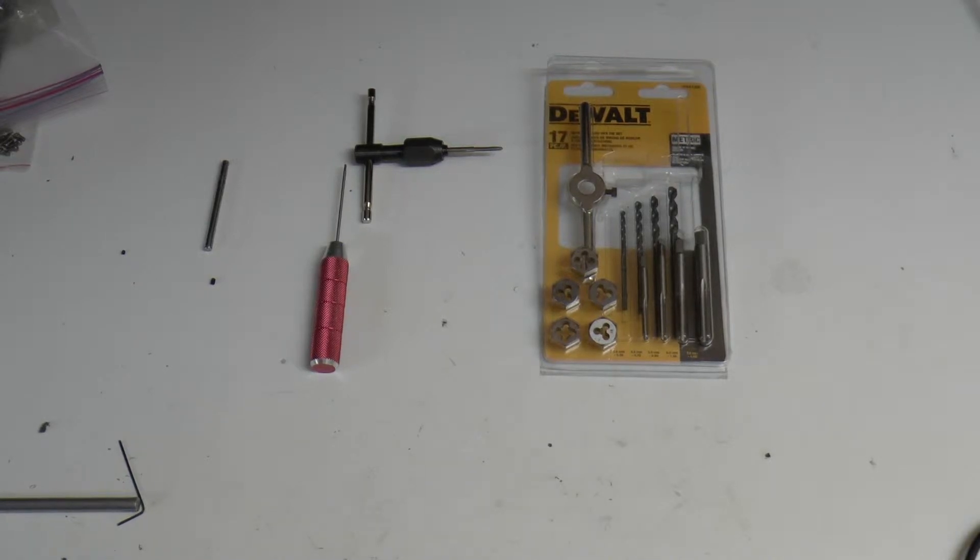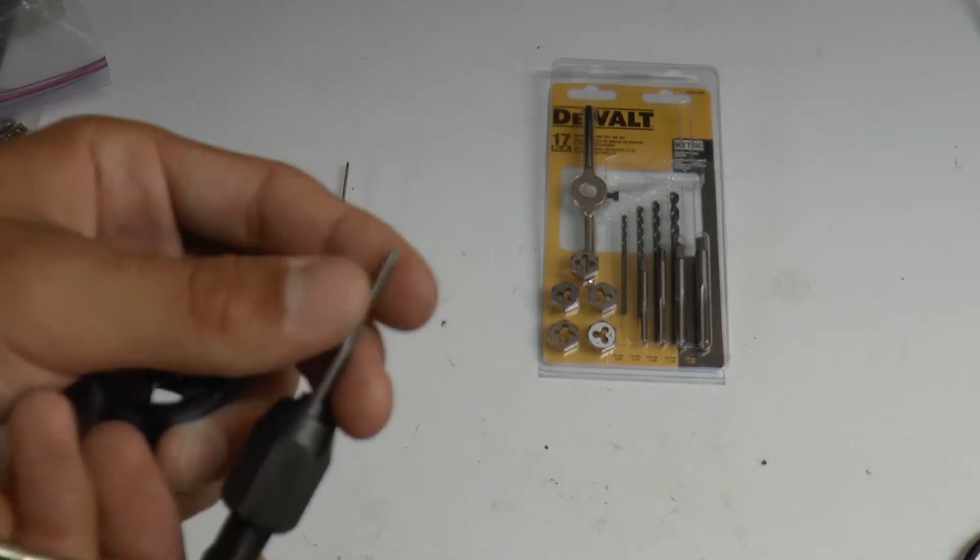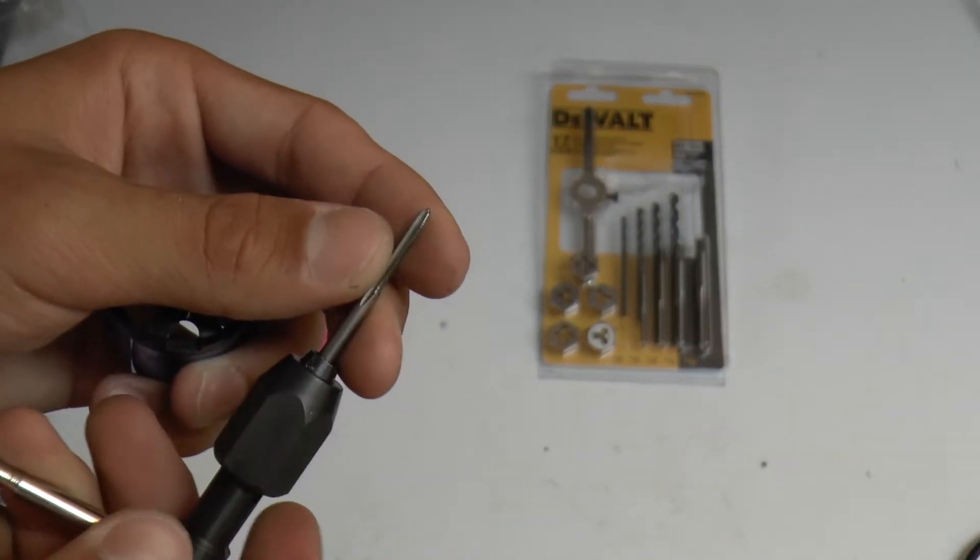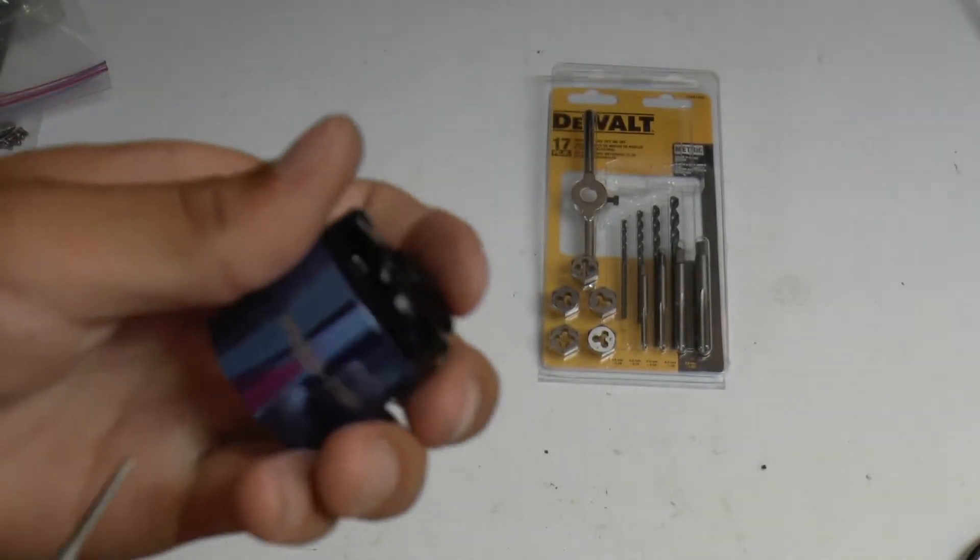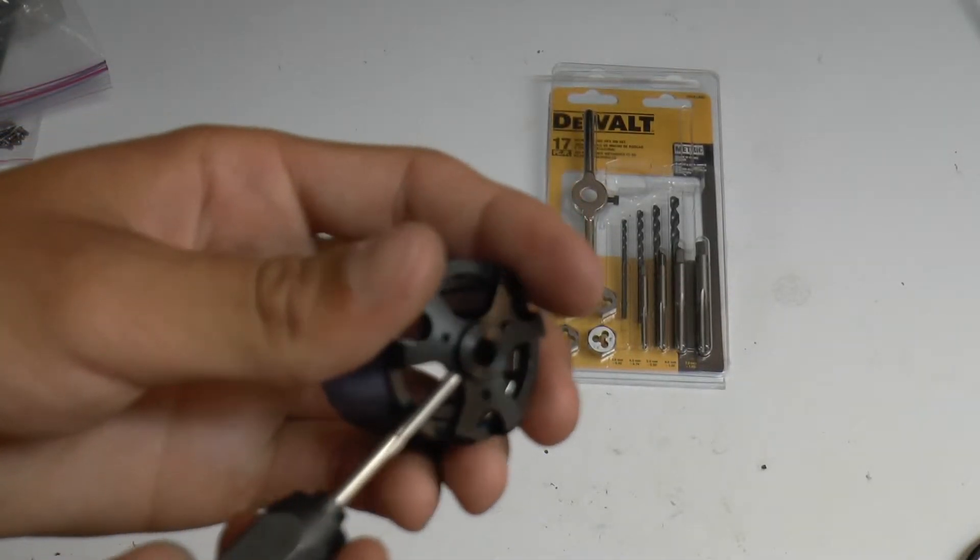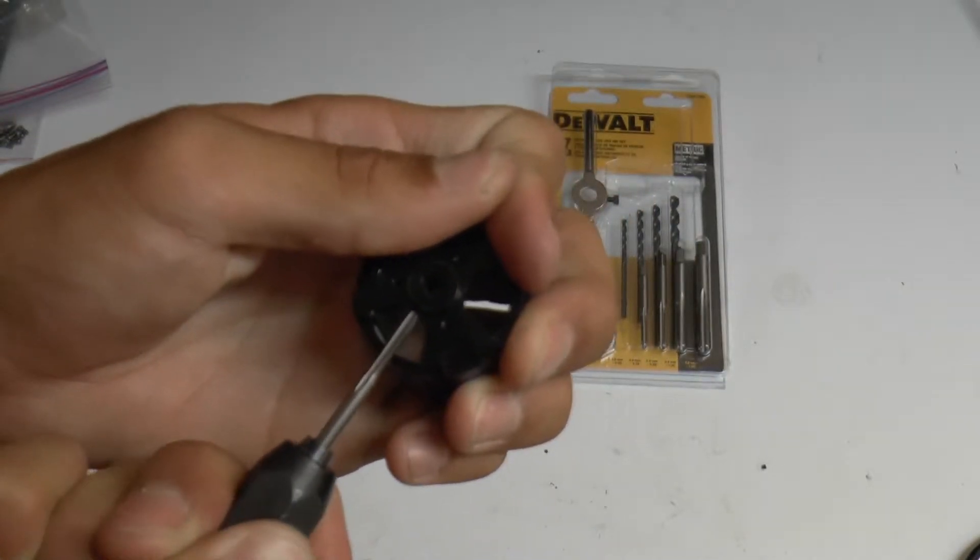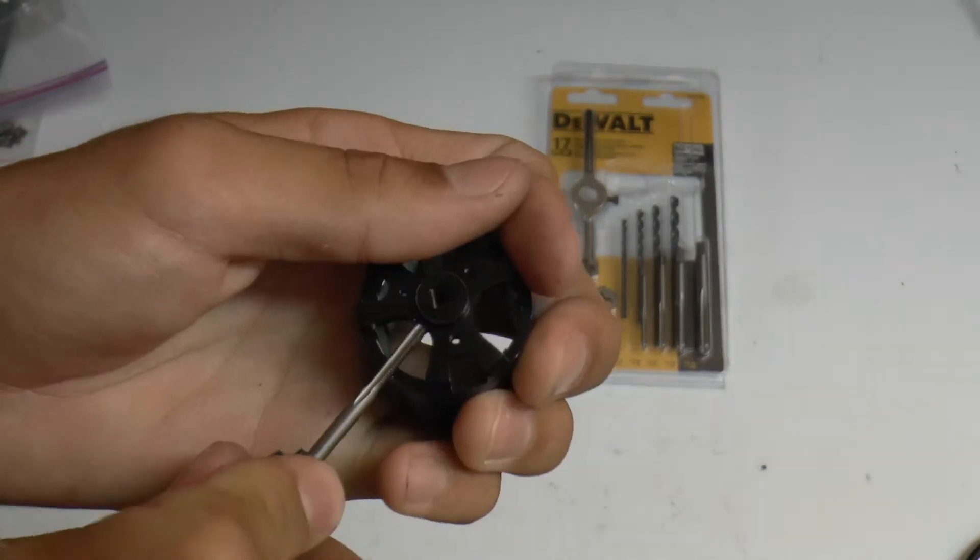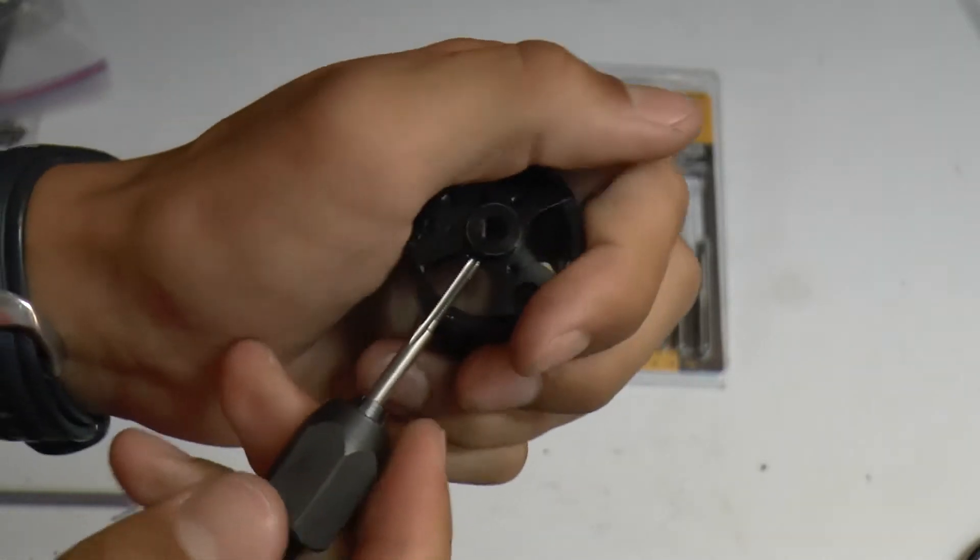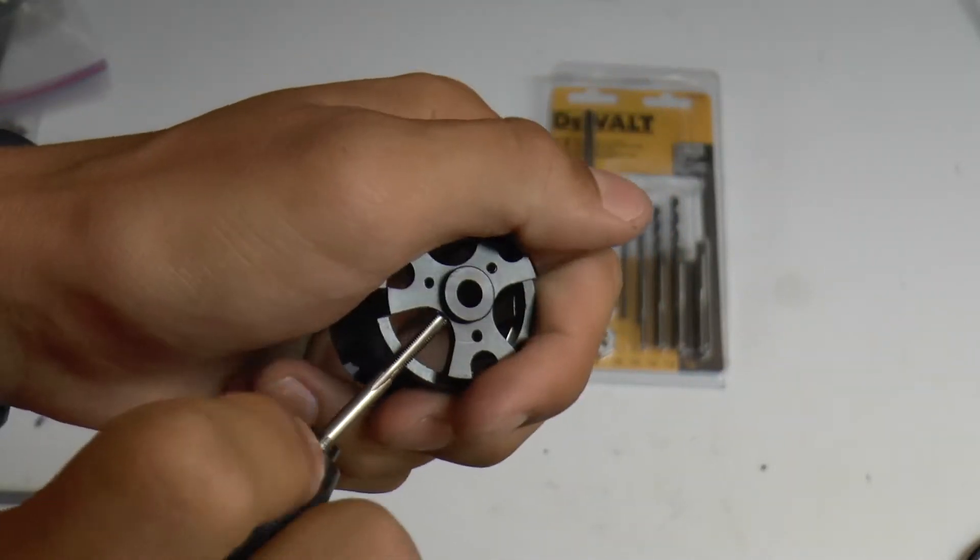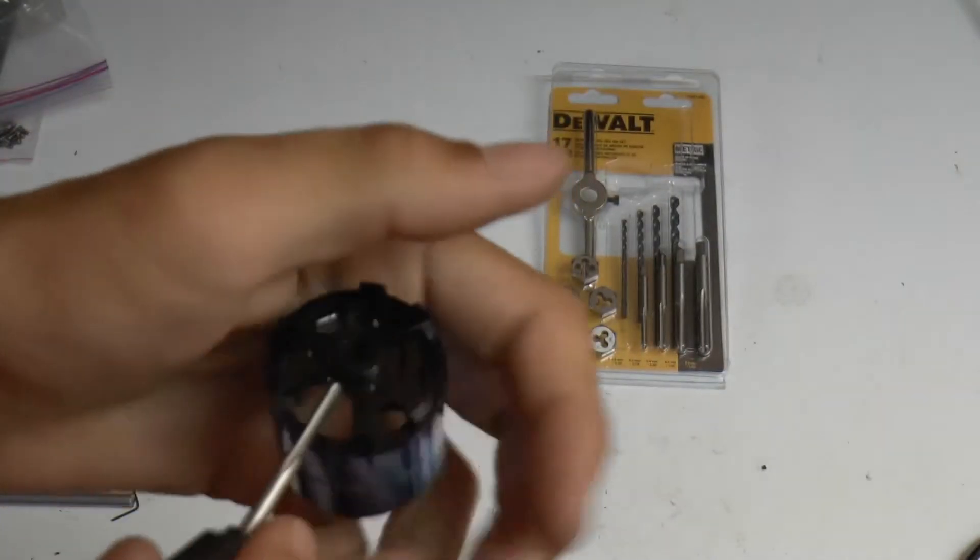Now here is the part that most people typically dread or feel like they can't do. So go ahead and load the threading device into the tool that they provide, and go ahead and insert it into the new hole that you just drilled out to be larger, and press. And apply a lot of force, but try to go in as straight as you can. Go in and let the tapping device kind of find its way.